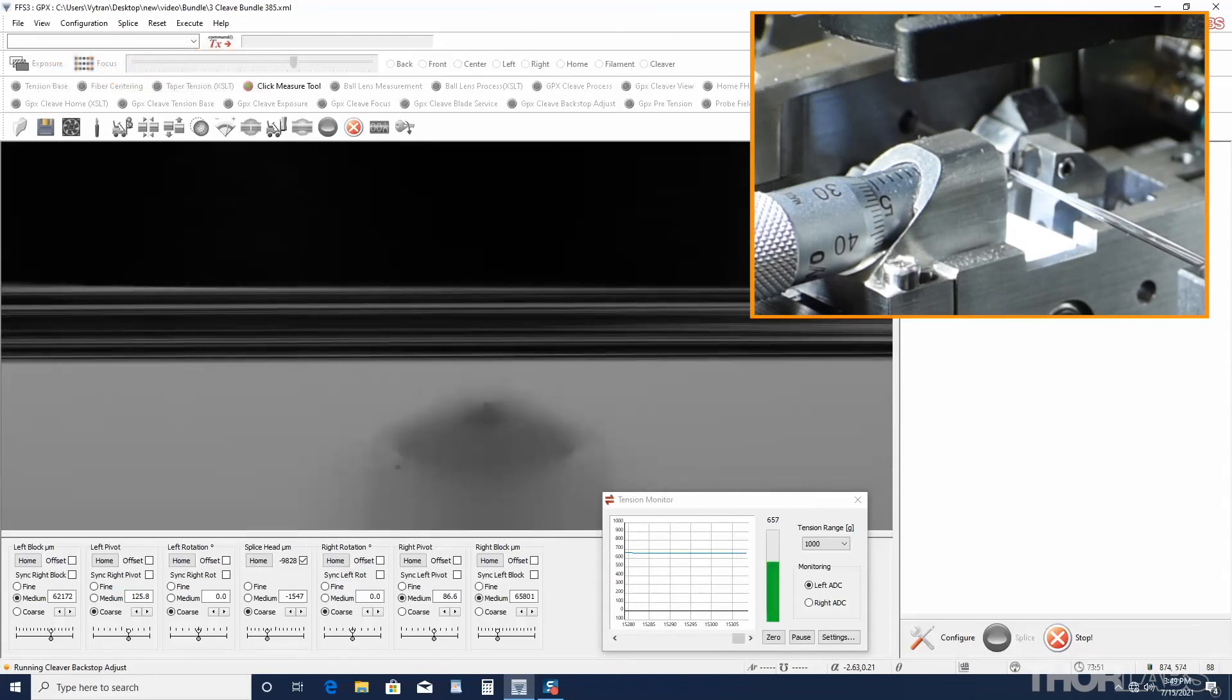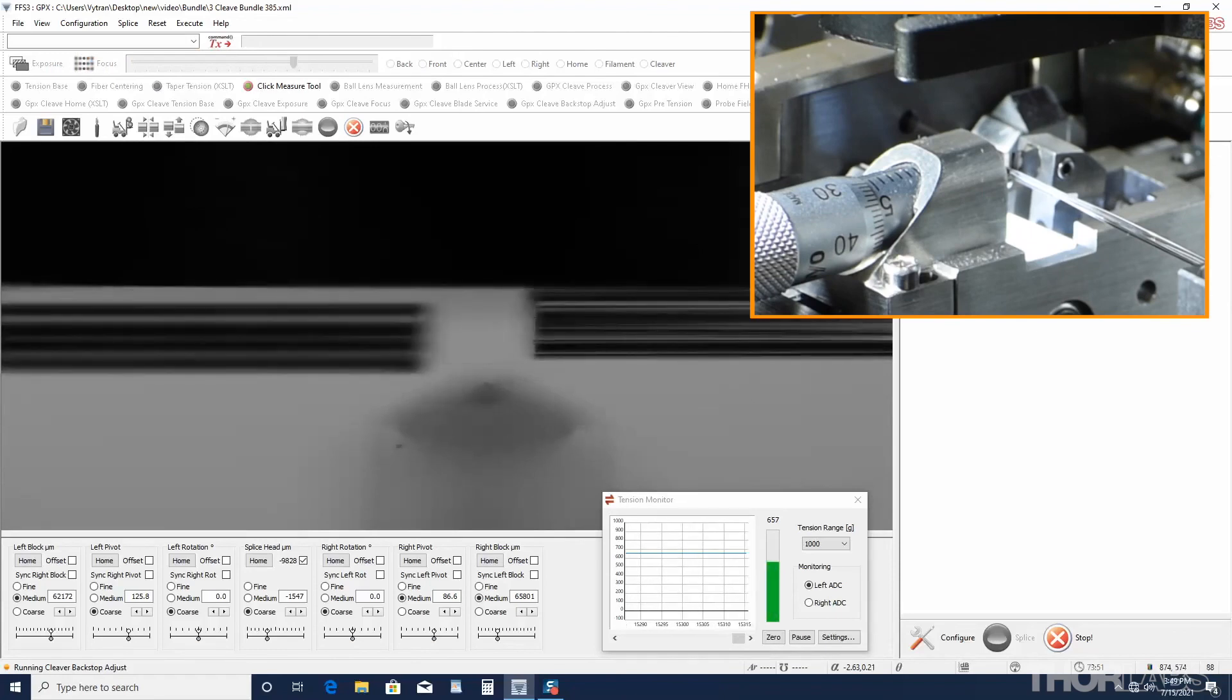It then oscillates forward and back, edging forward, until it just nicks the bundle, forming a scribe mark. The tension along the bundle then causes the scribe mark to propagate as a cleave across the bundle.